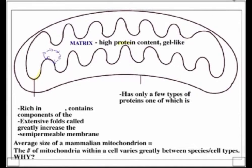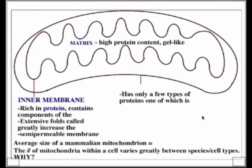The inner mitochondrial membrane is packed full of protein. In fact, if you were to look at a ratio of protein to lipid, you would see that ratio would be 4 to 1. So there is by far more protein across this membrane than there is lipid. That's really interesting, and it tells you something about function.